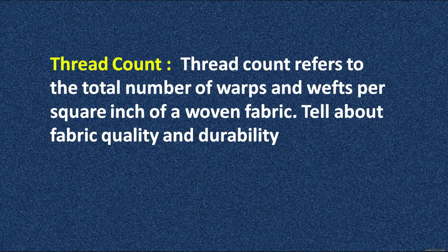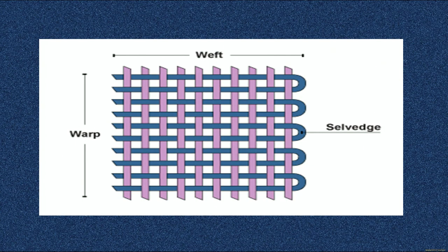Now, what is thread count? Thread count refers to the total number of warp and weft yarn per square inch of a woven fabric. The basic purpose of knowing thread count is to understand the quality and durability of the fabric. For example, cotton fabric has a very high thread count, because of which it is very durable and its quality stands well among other fabrics. You can see in the picture the weft yarn, the warp yarn, and the selvedge with loops running parallel to the warp yarn throughout the length of the fabric.